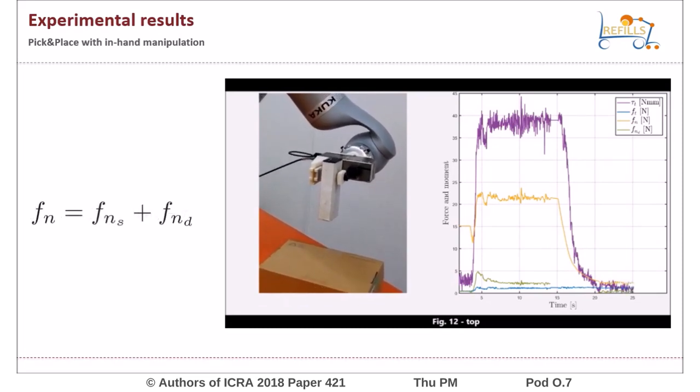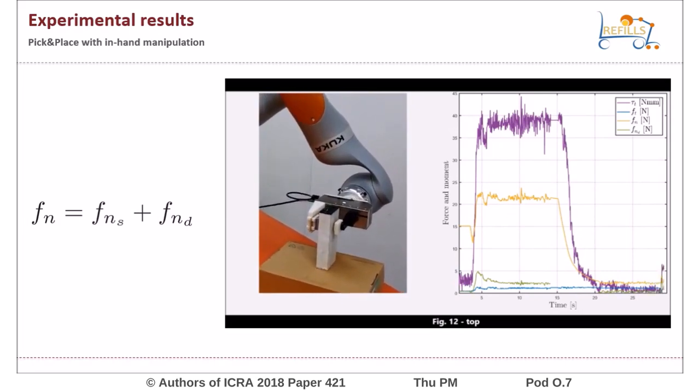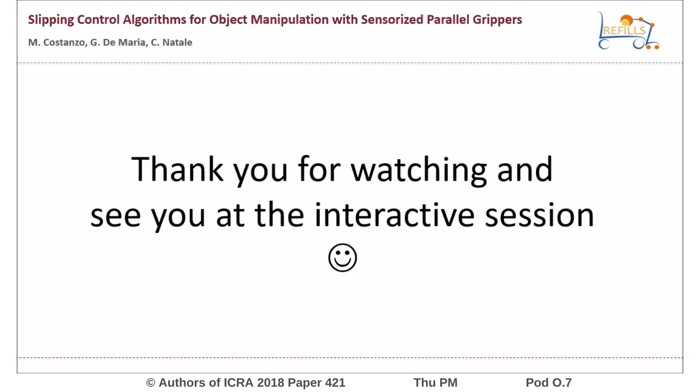Finally, the slipping avoidance algorithm is reactivated and the robot places the object on the box again. Thank you for watching and see you at the interactive session.